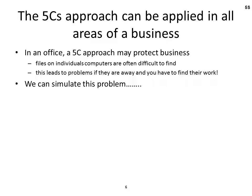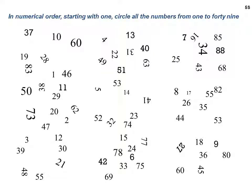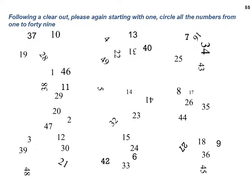The Five C's approach can be applied in all areas of business. Here's a little simulation — imagine files on a computer that are difficult to find. If you were away and somebody had to look at your desktop or laptop and try to find a file, let's simulate this problem. Here's a set of numbers in numerical order starting with 1 — circle all the numbers from 1 to 49. Now let's clear away the numbers you don't need, and you'd find it's a lot quicker a job.